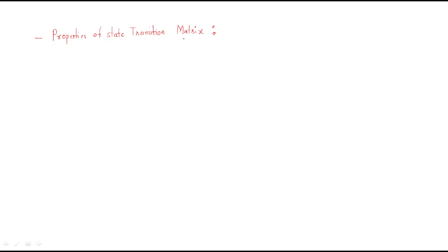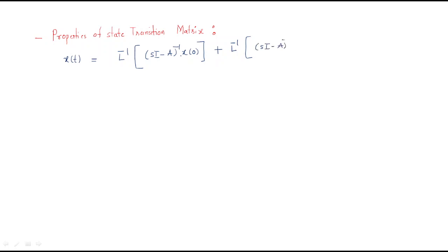What is the state transition matrix? In the last session we discussed about the state transition matrix, so let us recollect this. Whenever we are getting the solution for the state model, the equation is: x(t) equals the Laplace inverse of (sI minus A) whole inverse into x(0), plus Laplace inverse of (sI minus A) whole inverse times B into U(s). We are getting two solutions — the first solution and the second solution.